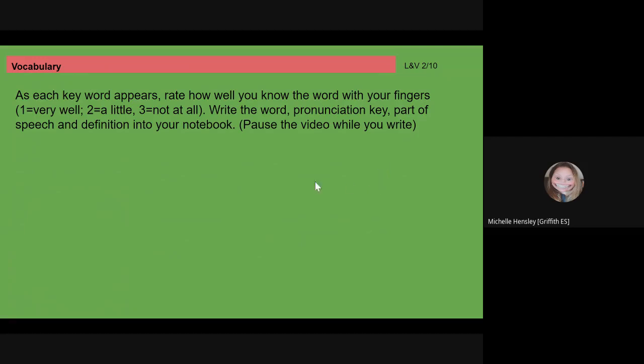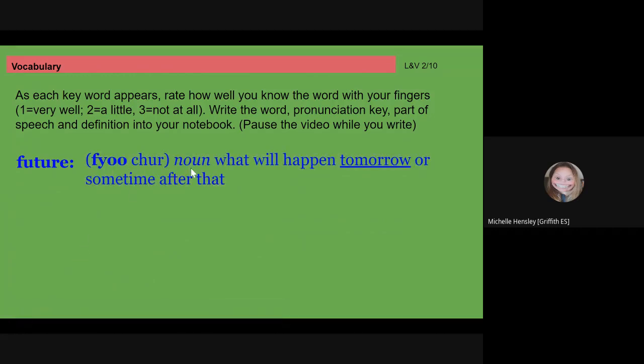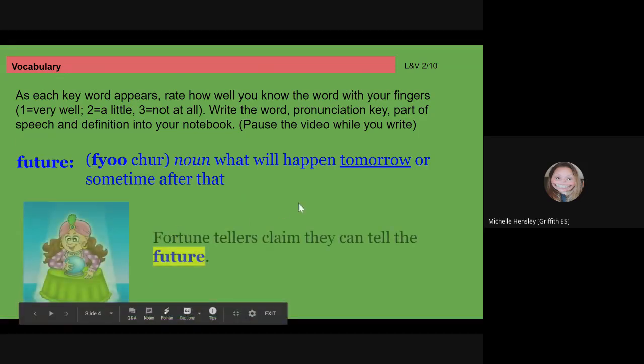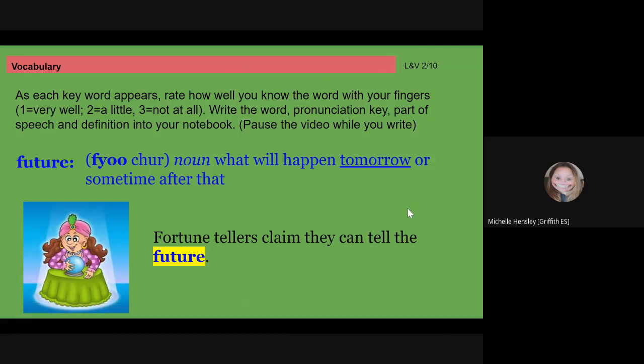All right, sorry, I forgot to warn you on that one. You might need to go back. We're going on to the next word, and the next word is future. I better see a lot of ones and twos on this one. Future. What is the future? Future, two syllables, it's a noun. What will happen tomorrow or sometime after that. Tomorrow or sometime after that is the future. Anything that is ahead of now, anything that is going to happen at some later point than right now is the future. Fortune tellers claim they can tell the future. The future, what's going to happen tomorrow or sometime after tomorrow. Pause the video if you need.